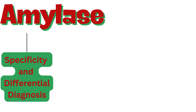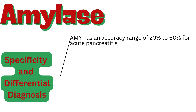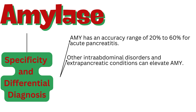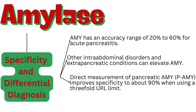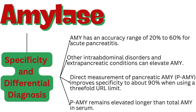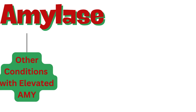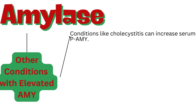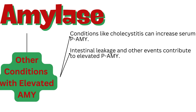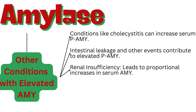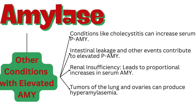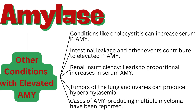Amylase lacks specificity for diagnosing acute pancreatitis, with an accuracy range of 20% to 60% for acute pancreatitis. Other intra-abdominal disorders and extra-pancreatic conditions can elevate AMY. Direct measurement of pancreatic AMY (PAMY) improves specificity to about 90% when using a 3-fold URL limit. PAMY remains elevated longer than total AMY in serum. Conditions like cholecystitis can increase serum PAMY. Renal insufficiency leads to proportional increases in serum AMY. Tumors of the lung and ovaries can produce hyperamylasemia, and cases of AMY-producing multiple myeloma have been reported.